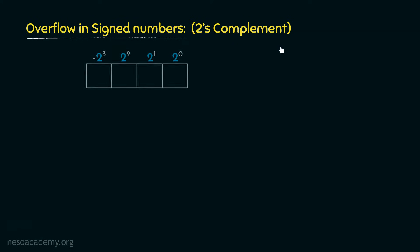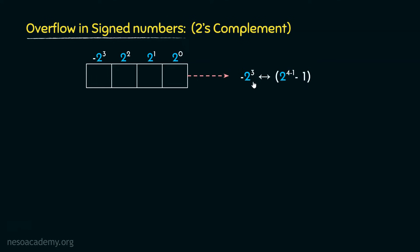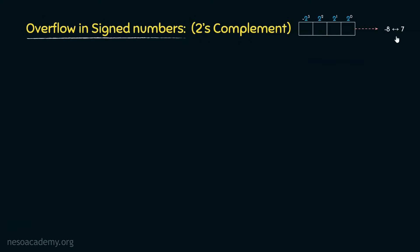Let's observe how overflow is detected in 2's complement representations. For a given storage space, the range of values we can represent is minus 2 to the power n minus 1, to 2 to the power n minus 1 minus 1. With 4 bits, n equals 4, giving us minus 2 cubed which is minus 8, up to 2 cubed minus 1 which is 7. So using 4 bits in 2's complement, we can represent values from minus 8 to positive 7.